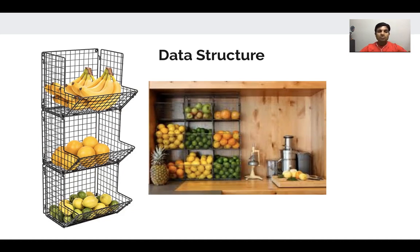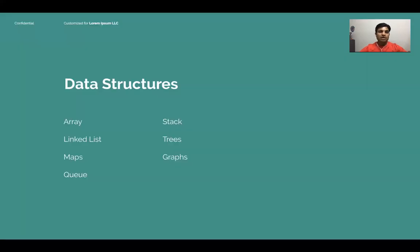Now, based on the need, you can arrange the fruits and also the data. There are different varieties like array, linked list, maps, queue, stack, trees and graphs. Graphs are like a friend of a friend.